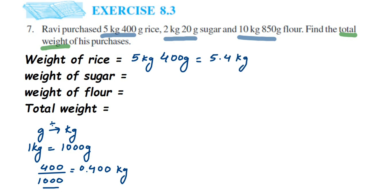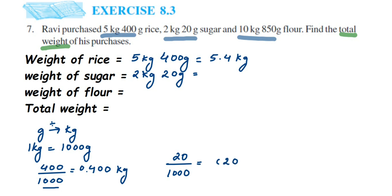Similarly, the second item: 2 kg and 20 grams. We convert 20 grams into kg by dividing by 1000. There are three zeros in the denominator, so placing the decimal three digits from the right, 20 becomes 0.020. So the weight of sugar is 2.020 kg.